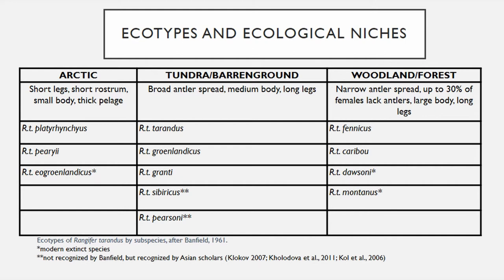As we currently understand it, these ecotypes formed through parallel evolution as groups of reindeer and caribou underwent ecological niche adaptation into woodland or forest — which is the largest ecotype — tundra or barren ground ecotypes, and arctic ecotypes in arctic environments.